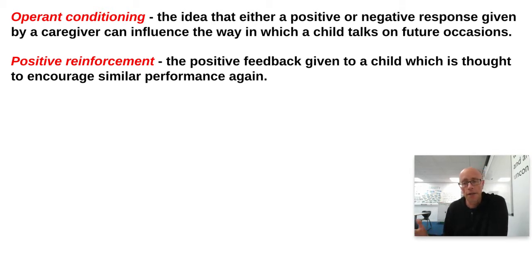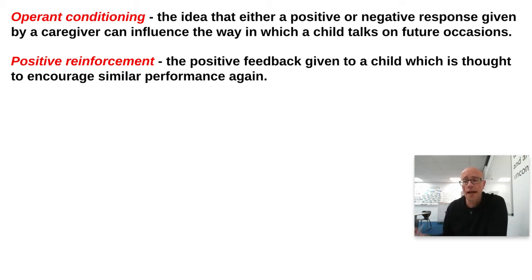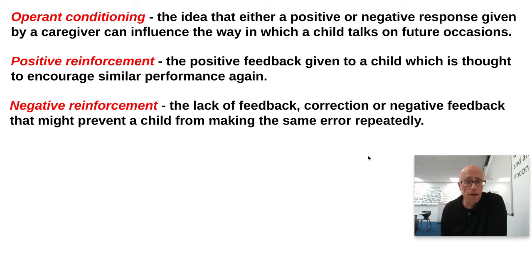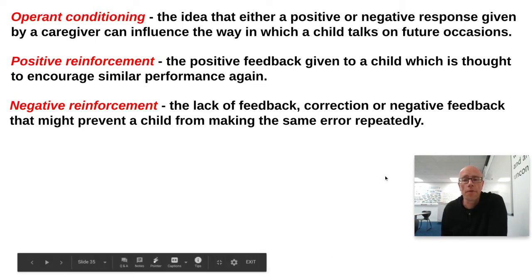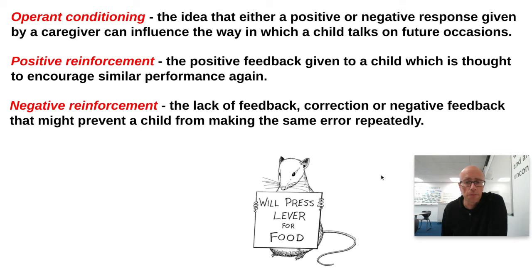He breaks it down into two areas: positive reinforcement and negative reinforcement. Positive feedback given to a child encourages similar performance again — an adult answering a child's question, smiling, or rewarding them with sweets are all aspects of positive reinforcement. This is counterbalanced by negative reinforcement: lack of feedback, incomprehension, correction, or negative feedback, which might prevent a child from making the same error repeatedly.